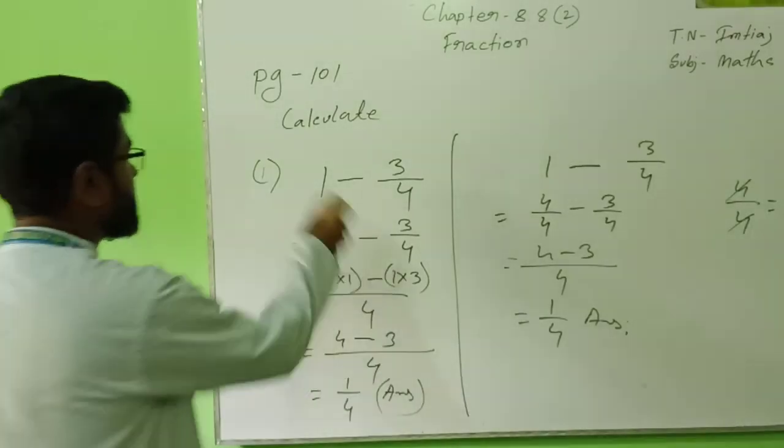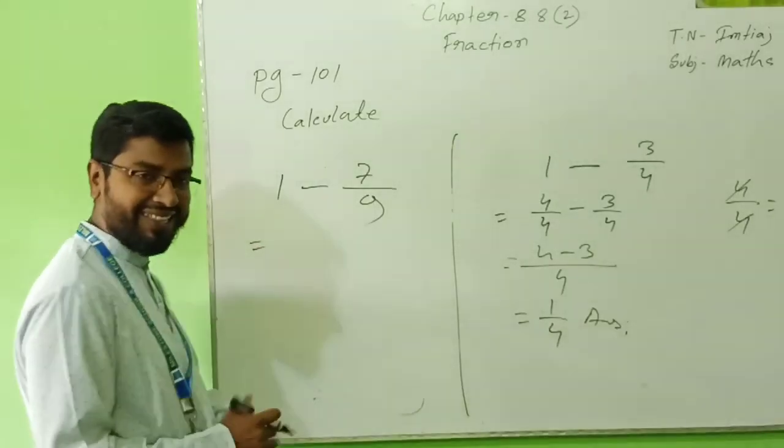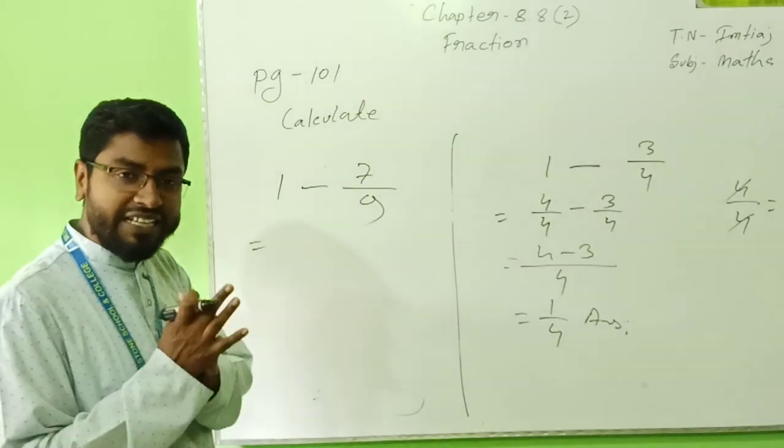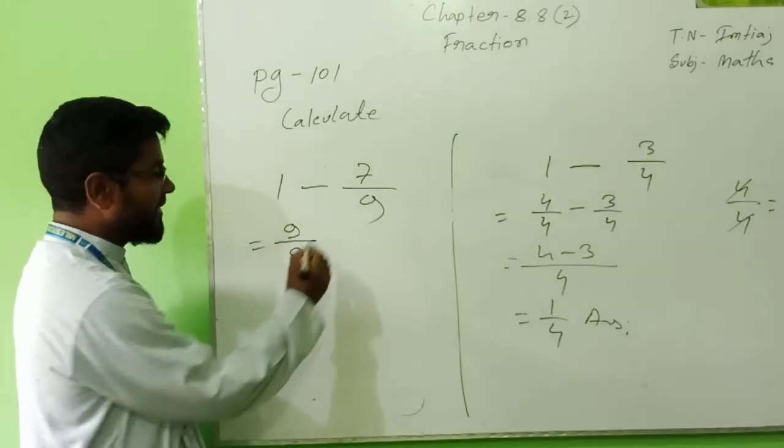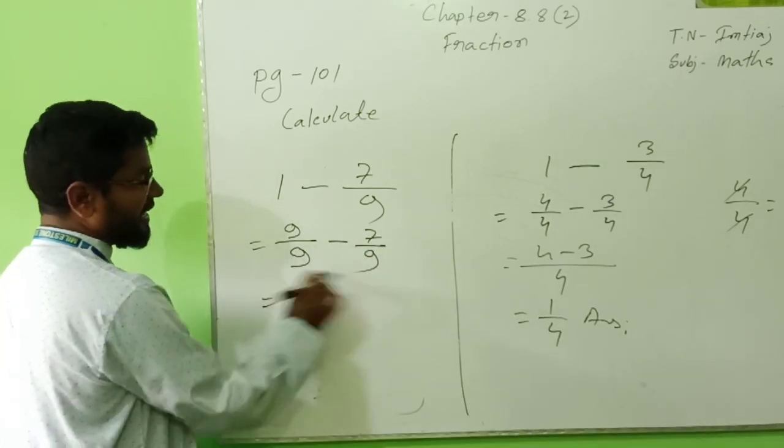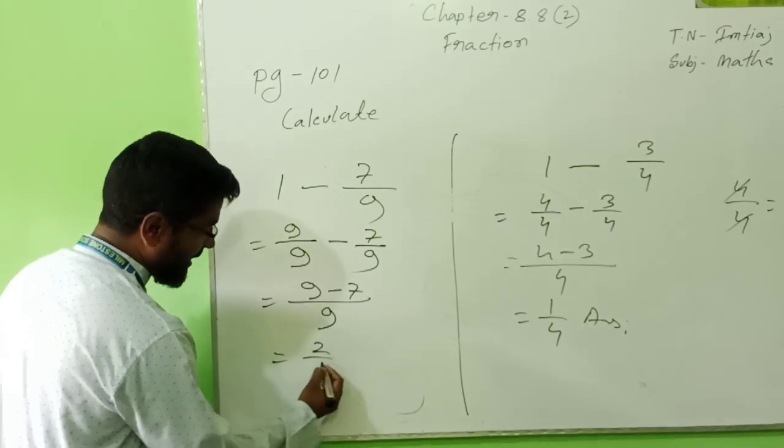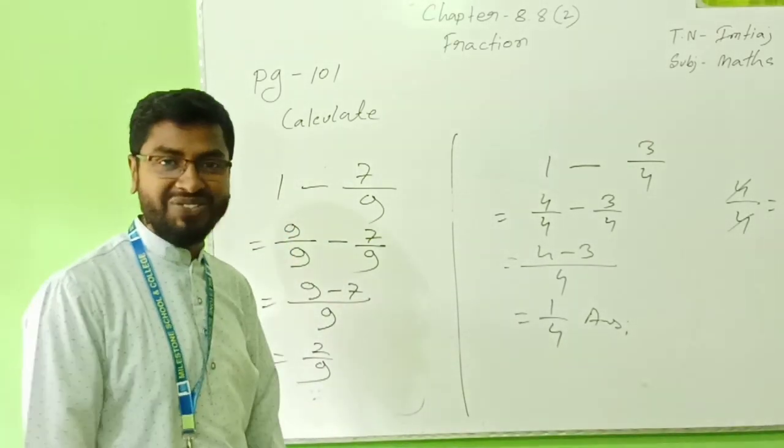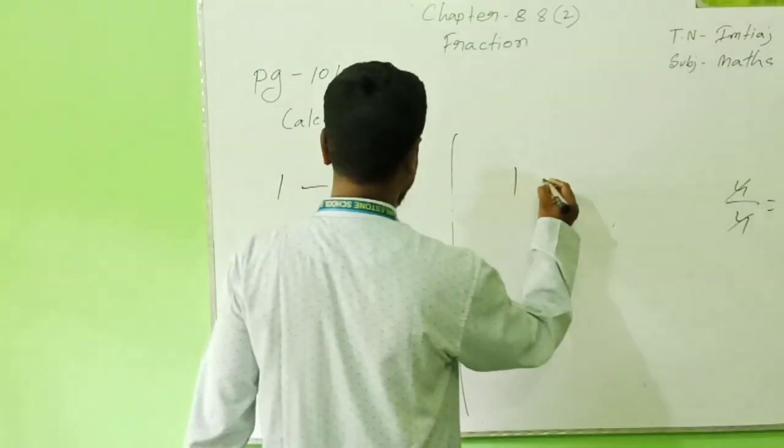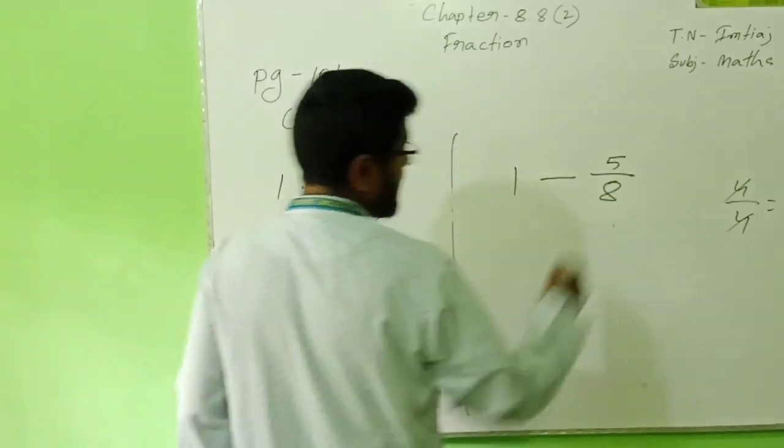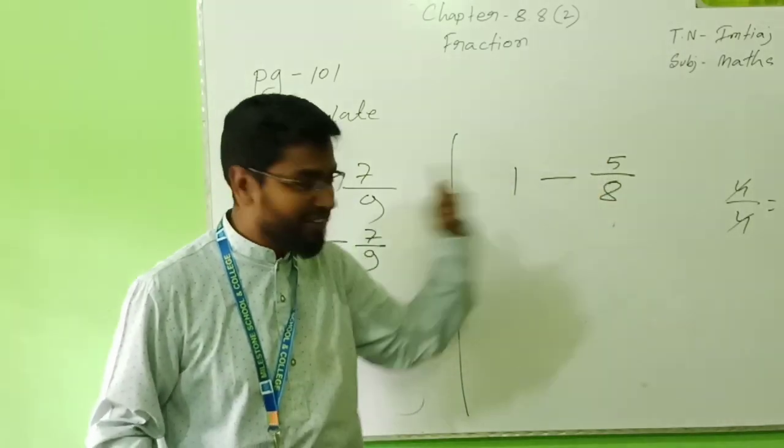Another one I will show you: 1 minus 7/9. So what will be instead of 1? I know 1 value in fraction, numerator and denominator is same. To make it 9 as a denominator, upper I will write 9 and down 9. Minus 7/9. So it is like fraction. So same 9, 9 minus 7, what will be here? 2/9. Have understood? This is very interesting.